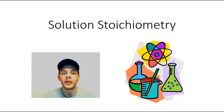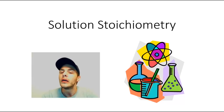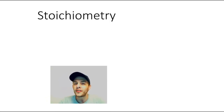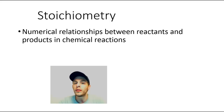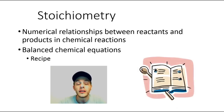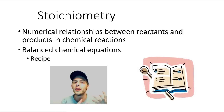Assuming that we have a fairly decent understanding of stoichiometry, we can now discuss it in the context of solutions. Stoichiometry is the branch of chemistry that is concerned with the numerical relationships between reactants and products in chemical reactions. Stoichiometry uses balanced chemical equations, and those balanced chemical equations basically serve as recipes — they tell you how many of each reactant you have to put in and how many of each product you get out.